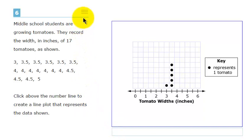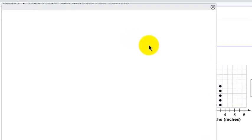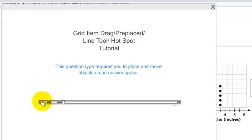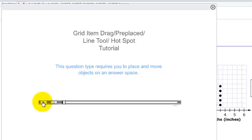If they didn't know how to do that and they went to the context menu and clicked on tutorial, they would see the grid item drag/preplaced/line tool/hotspot tutorial which is four tutorials combined into one and it would be very difficult to watch this tutorial and understand how to create a line plot.